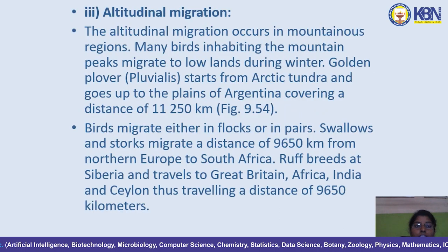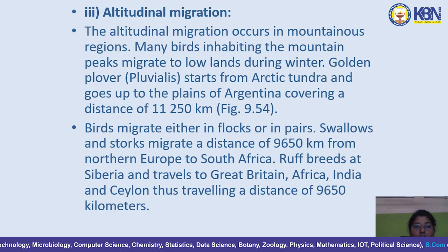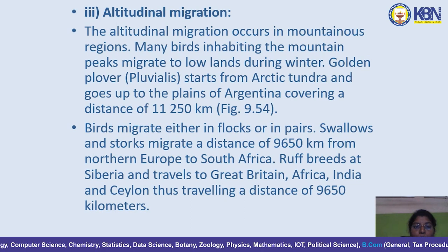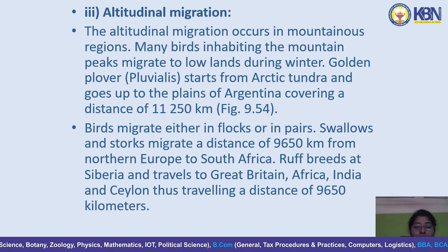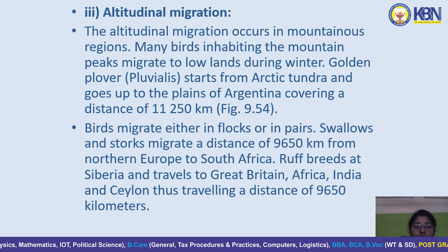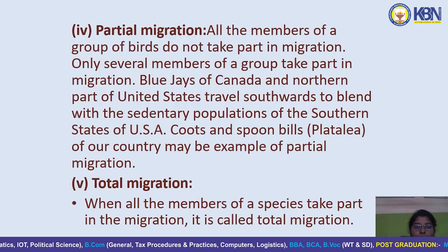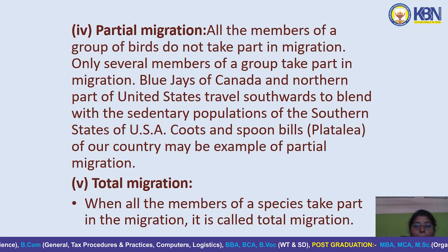Altitudinal migration occurs in mountainous regions. Many birds inhabiting mountain peaks migrate to lowlands during winter. The golden plover starts from the Arctic tundra and goes to the plains and islands of Argentina, covering a distance of 11,000 to 50,000 kilometers. In partial migration, not all members of a group take part — only several members migrate.